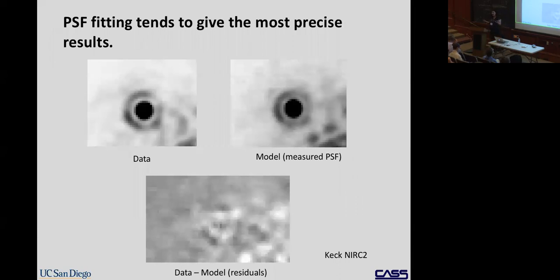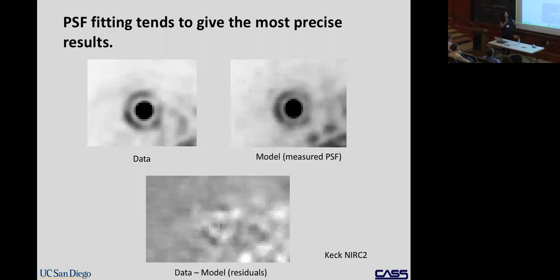For PSF fitting in practice, I use a star observed right before the target at the same wavelength as the PSF model. The match in the center is relatively good, but there's variation in the Airy rings out at the edges — a large source of bias for very precise astrometry. The residuals from PSF fitting tend to be better than using a simple Gaussian functional form.